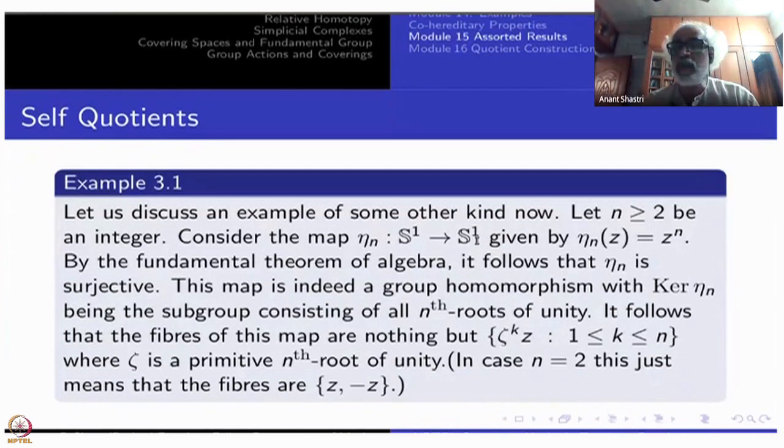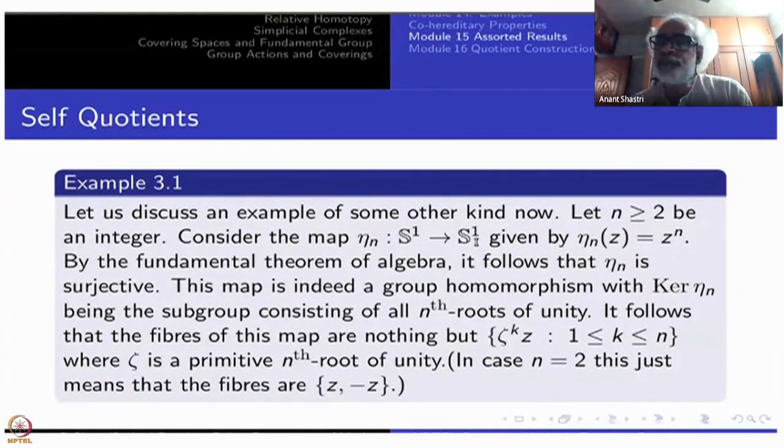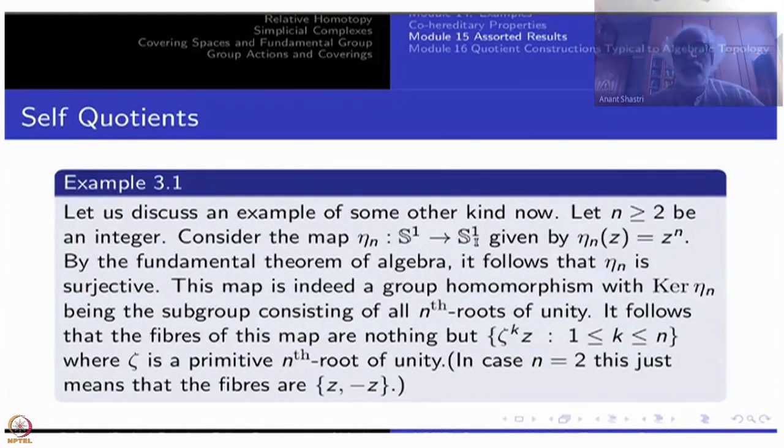But now what I have proved is, what fundamental theorem of algebra says is, all these maps are surjective. So from a compact space to a Hausdorff space, this will be automatically a quotient map. It is automatically a quotient map, it will be a closed map, only thing is it is not injective. So in various ways, several, infinitely many ways, S^1 is a quotient of itself.